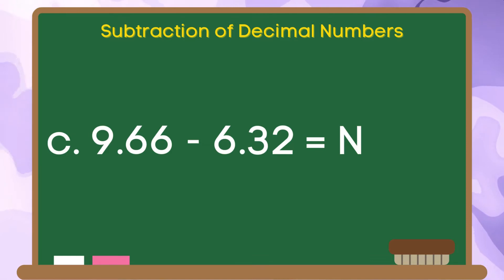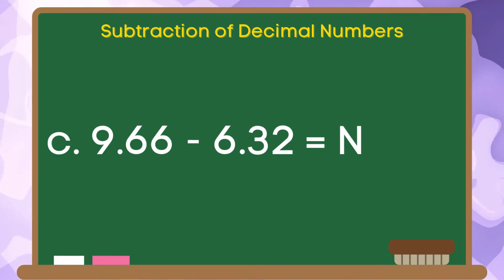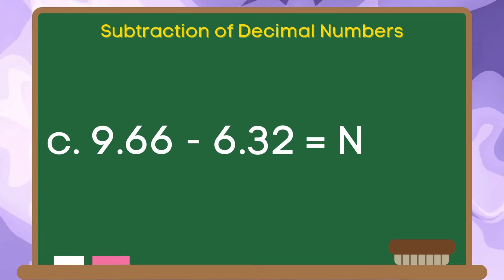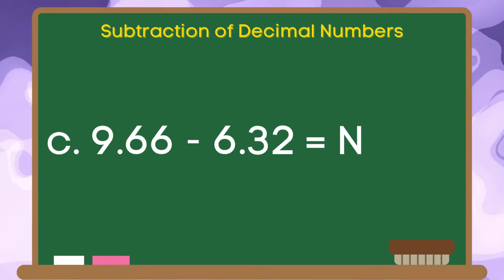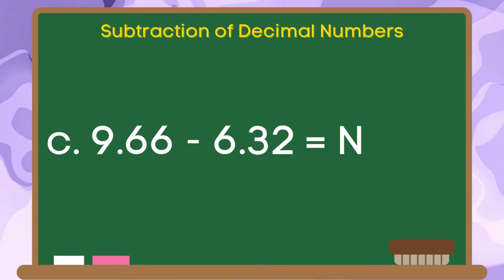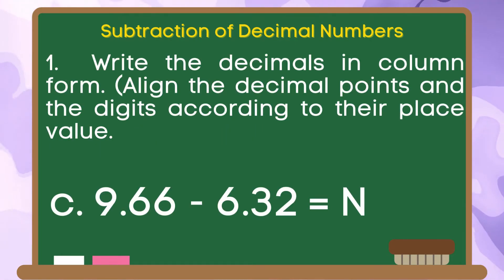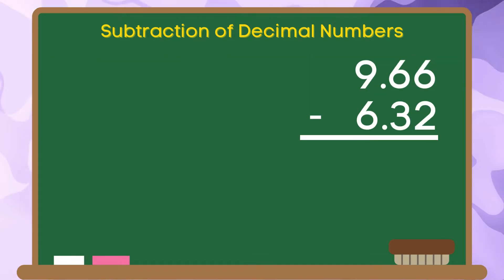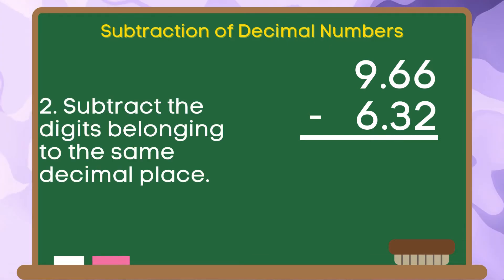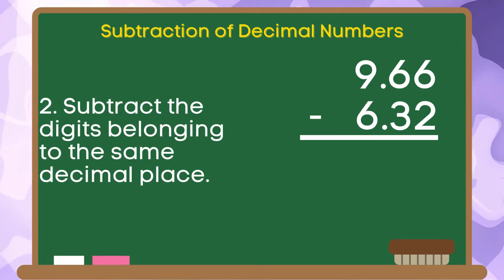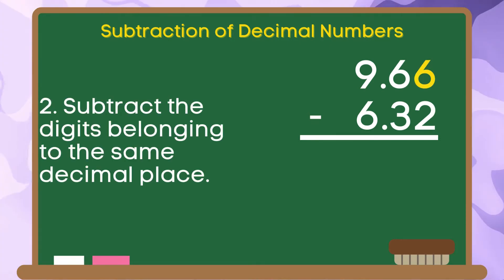For the third example, we have 9 and 66 hundredths minus 6 and 32 hundredths. Step 1: write the decimals in column form. Align the decimal points and the digits according to their place value. Step 2: subtract the digits belonging to the same decimal place.